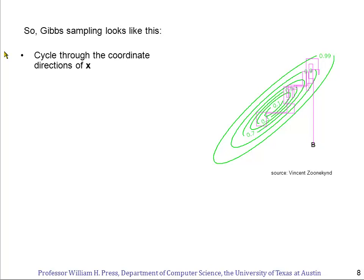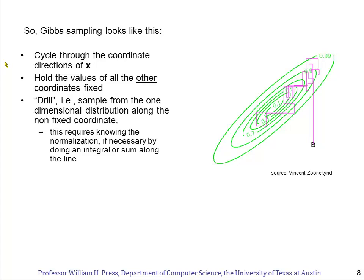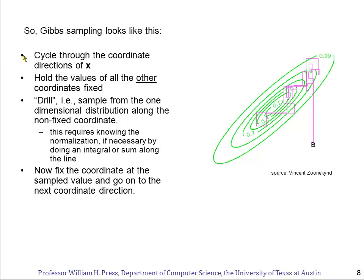So Gibbs sampling now looks like this. The acceptance probability is 1. So we cycle through the coordinate directions x. What I said before is I said pick a random direction x, but it turns out cycling through them is just as good. You hold the values of all the other coordinates fixed. You now sample along this one dimensional distribution to essentially find the whole distribution, therefore find its normalization, and then pick a sample from that one dimensional distribution. When we learned about generating random numbers, we learned all kinds of ways to sample from given one dimensional distributions. Now you fix the coordinate at that sampled value and go back to the first bullet up here and cycle through the directions.